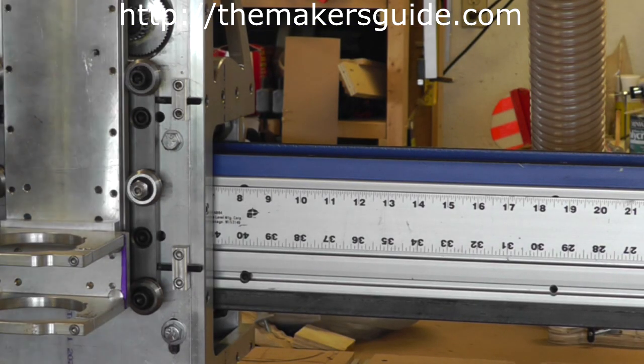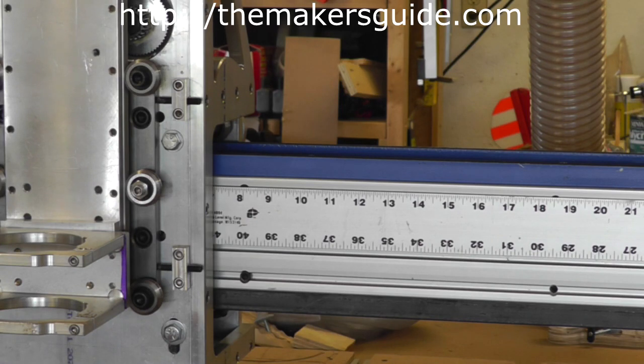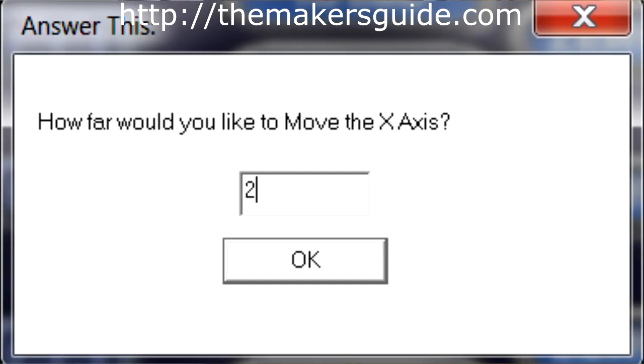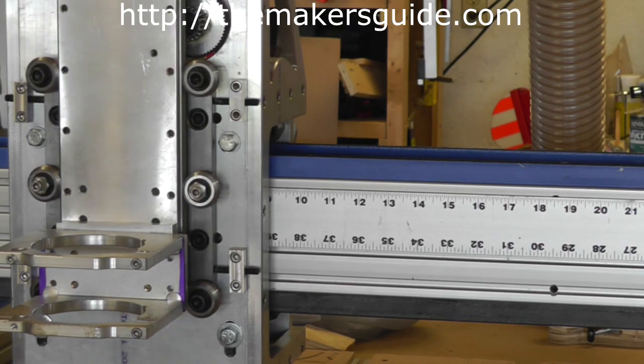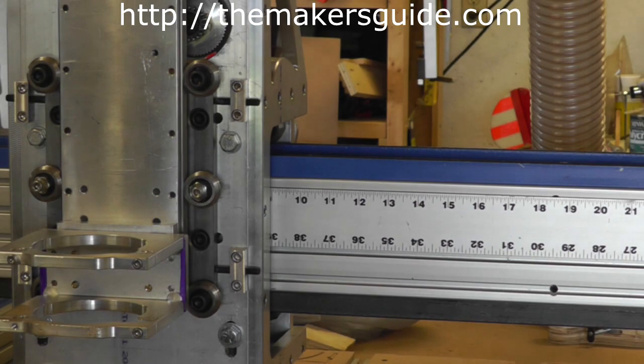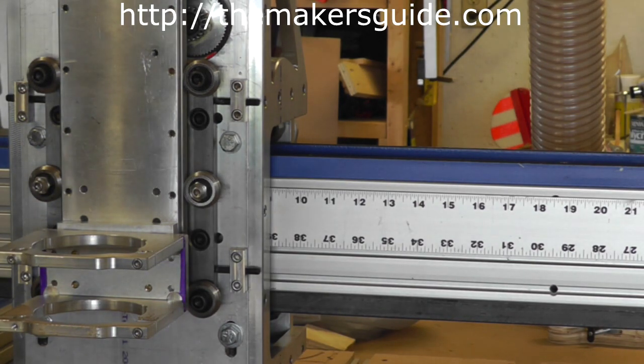I'm going to tell the carriage to move two inches. I go into the settings screen, hit the set steps per unit, select the X-axis, hit OK and enter 2 in the field and press enter. And it should move two inches, and as you can see, it lined up right on the mark at nine inches, so it moved two inches total.